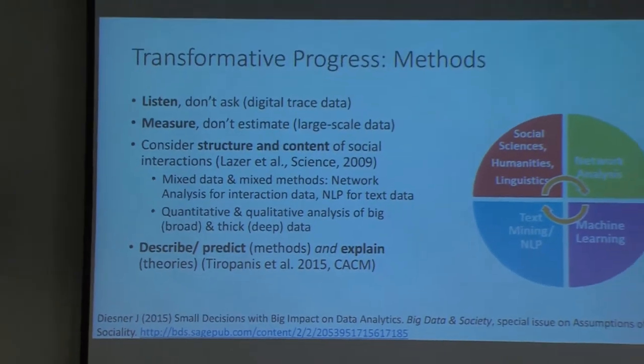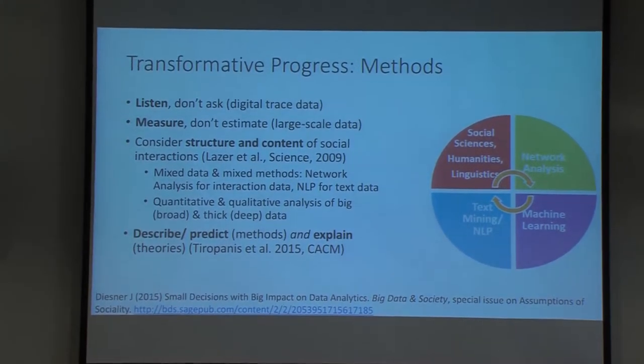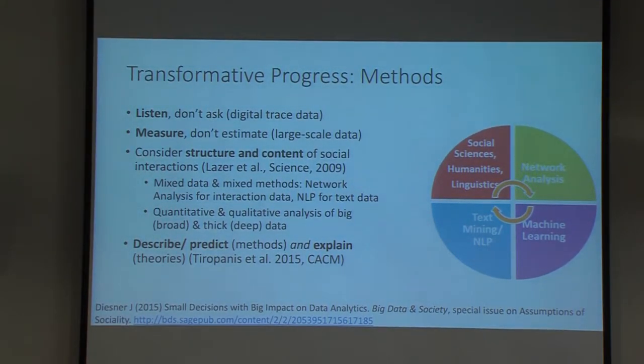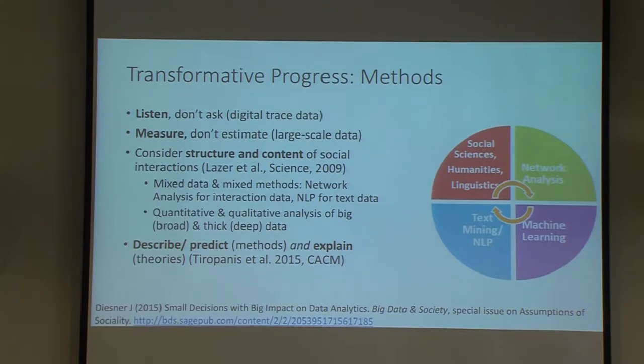Good morning. My name is Jana Diesner and I'm from the University of Illinois iSchool. When we talk about computational social science, there are some cool new things we can do. For one, we now have a chance to listen to people without having to ask them, simply because they generate digital trace data as intended or unintended byproducts of their daily activities. Second, sometimes we have access to full population data from a community or a country, which puts us in a situation where we can measure things instead of having to statistically estimate them.